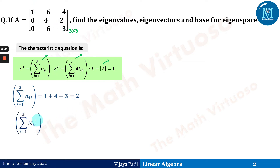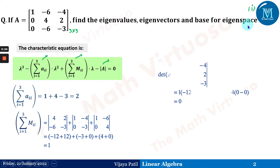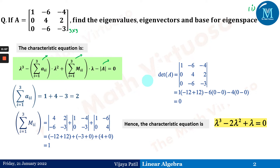The summation of a_ii gives the sum of diagonal elements, which is 2. The summation of M_ii we got as 1 — you can refer to the previous sessions for detail. The determinant came out as 0, so the characteristic equation becomes λ³ − 2λ² + λ = 0, with no constant term.